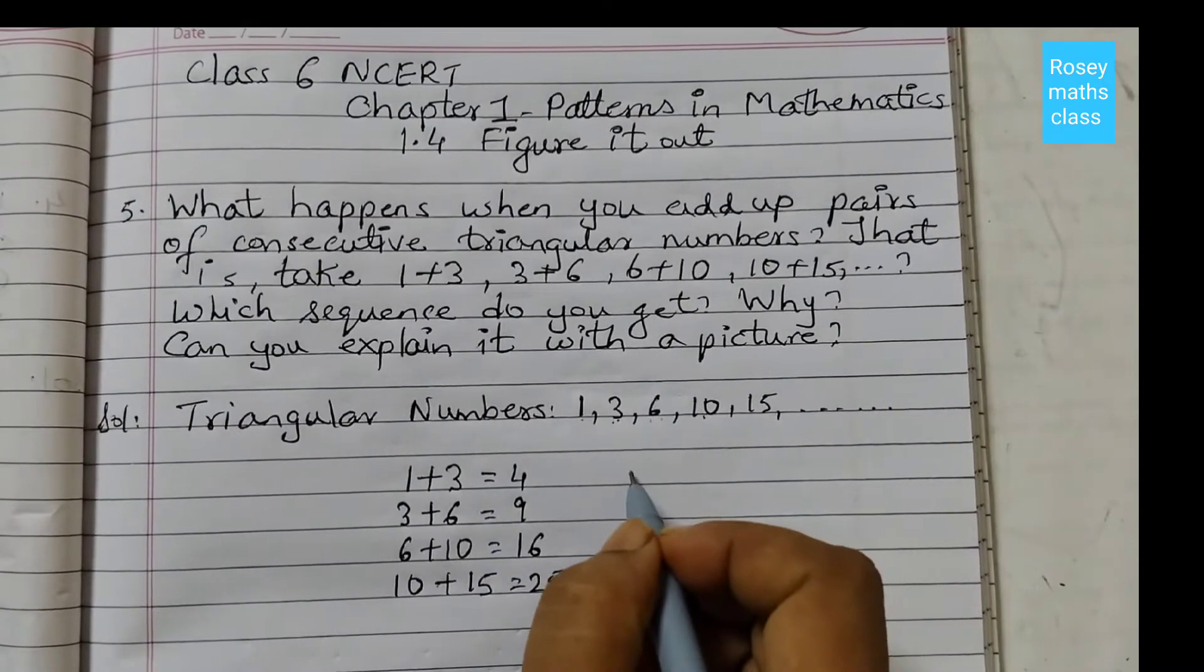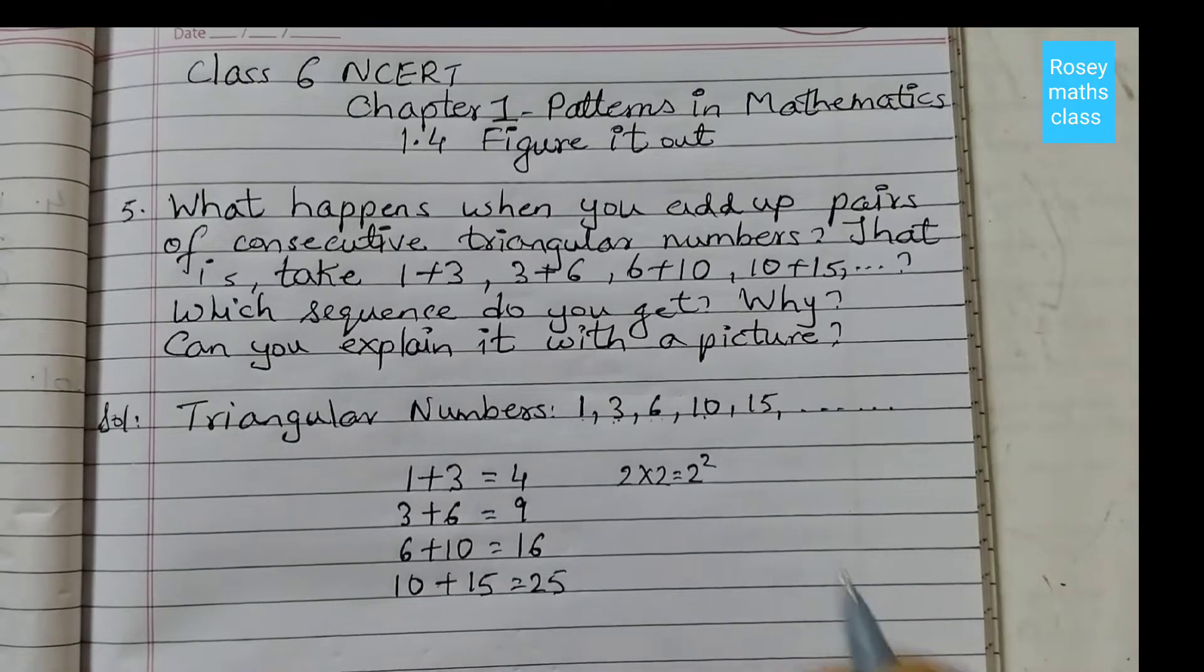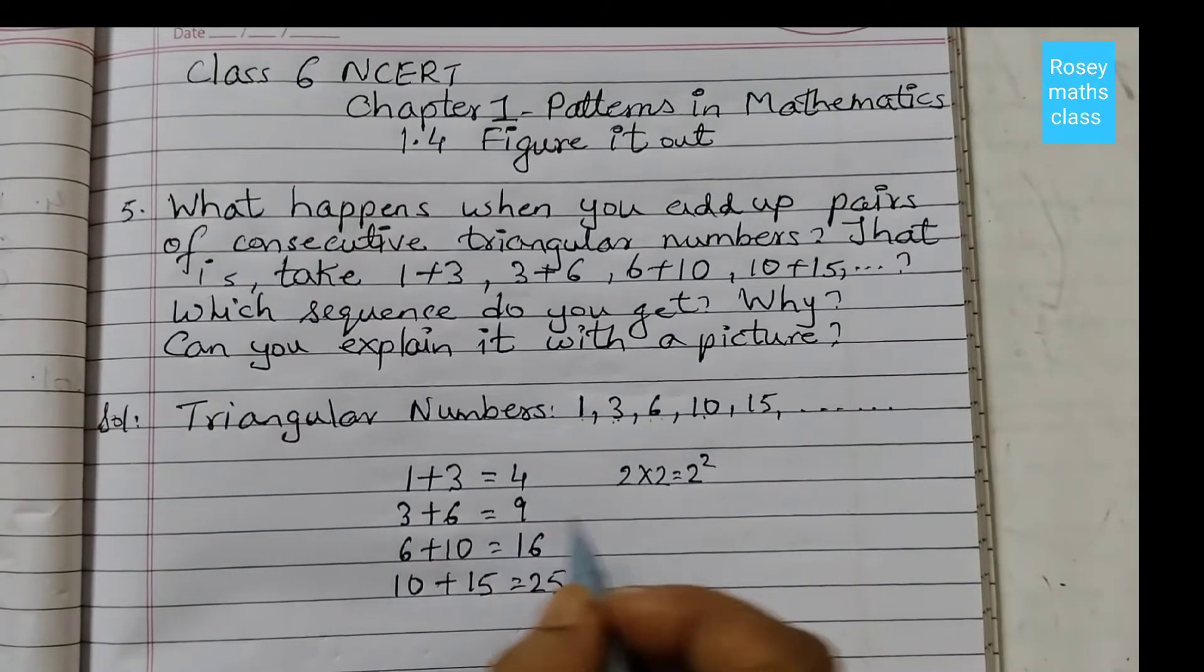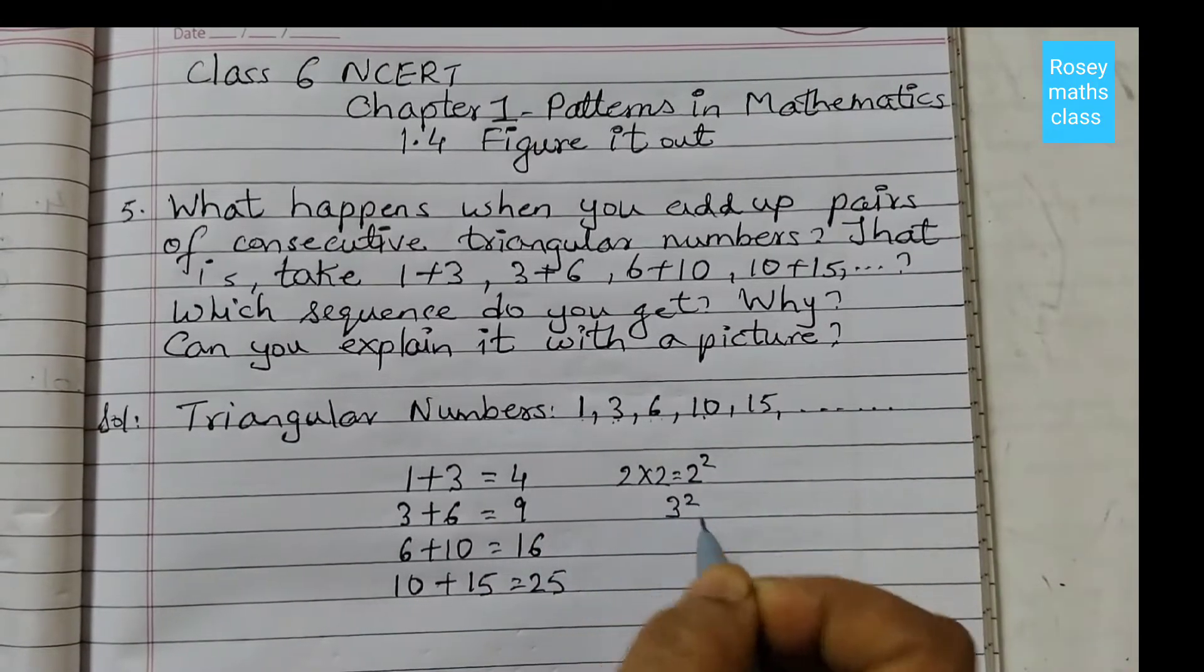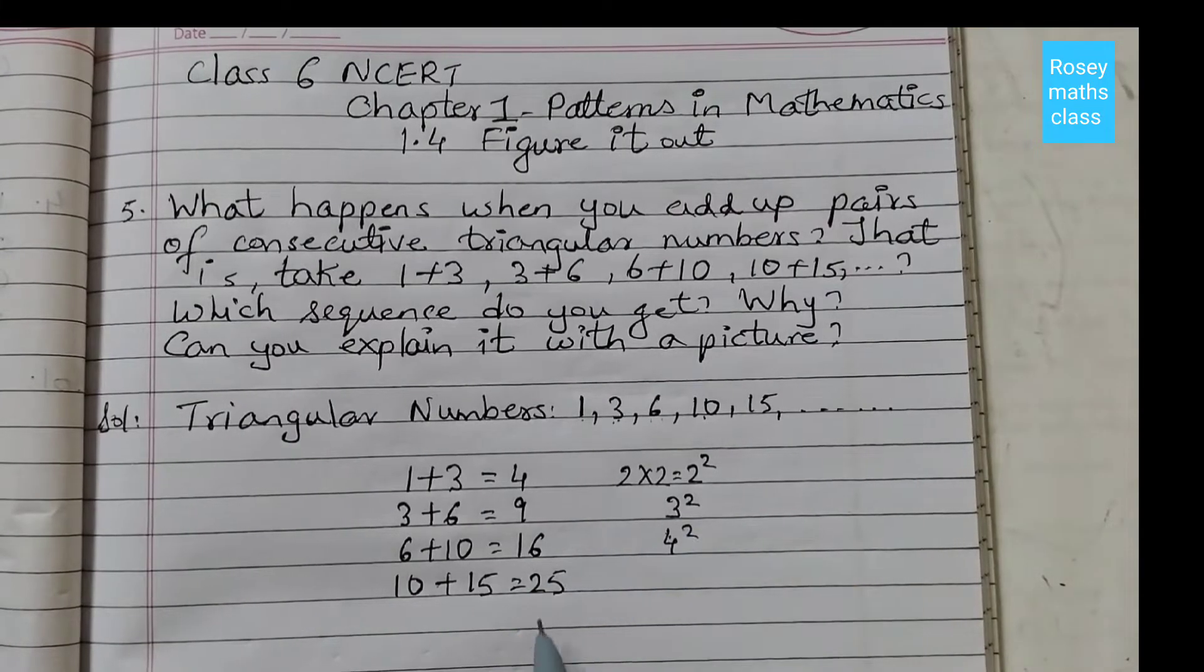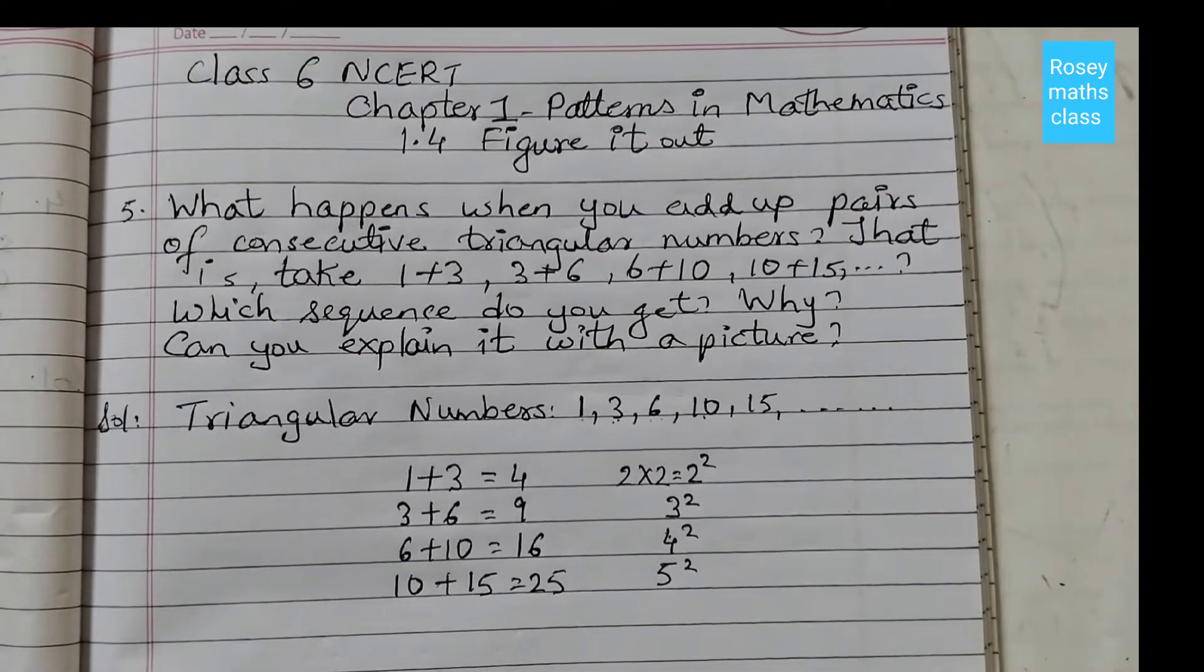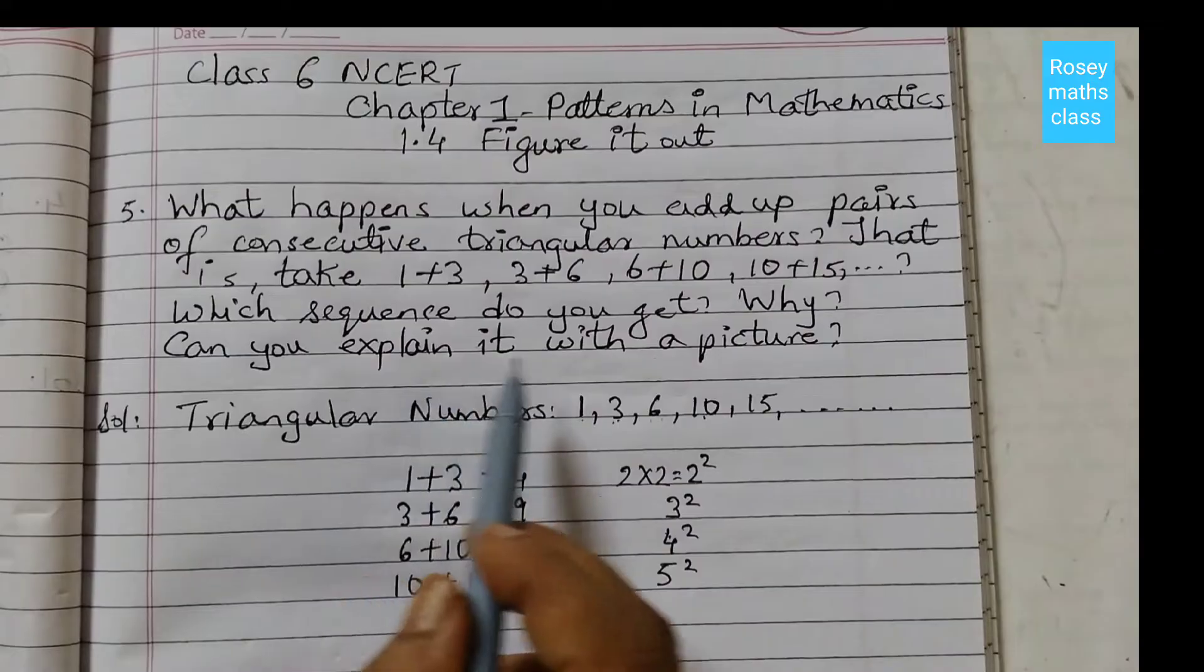4 can be written as 2×2 or we can say 2 squared. Similarly, 9 can be written as 3 squared. 16 is 4 squared. 25 is 5 squared. 5×5 is 25.